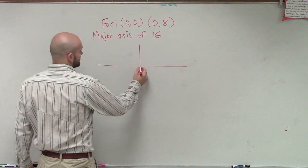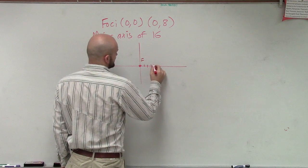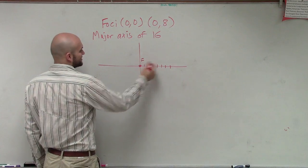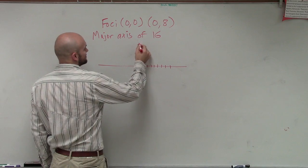So, what I have is I plot one foci at (0,0), and the other one at (0,8). That's up, not over 8.